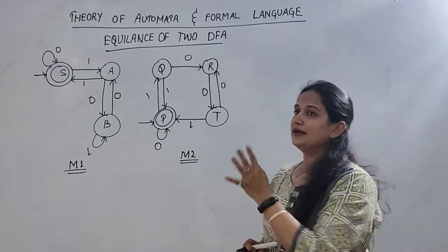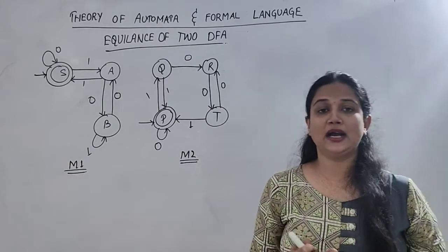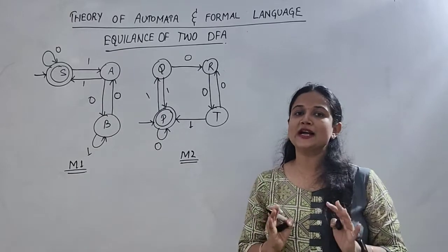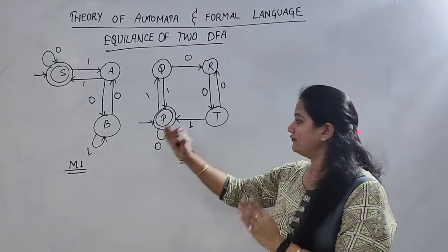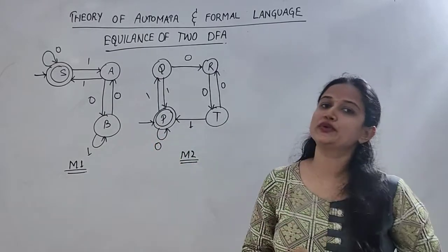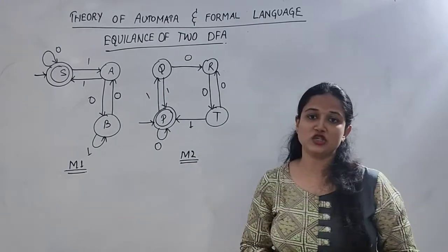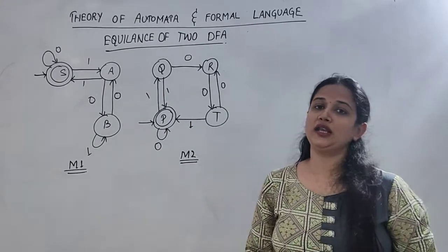We can see that the number of states may be different for the same language, or the structure is different, but the strings we pass, if they pass M1, then they are accepted by M2 as well. So how can you check that these two machines, M1 and M2, are equal in nature.